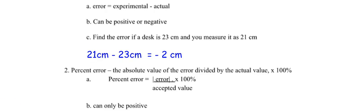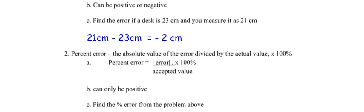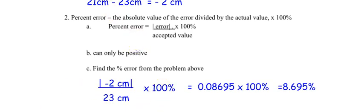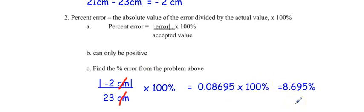Find the percent error from the problem above. The numerator is your error — when you subtract, that is your error — divided by the actual value of 23, times 100%. Notice what happens to the units: if you divide a unit by a unit, they cancel out, so there are no centimeters in the final value. 2 divided by 23 times 100% gives 8.695%. That's not too bad — it's under 10%.